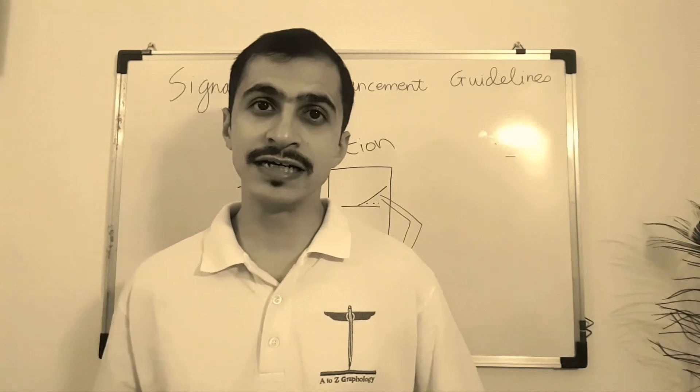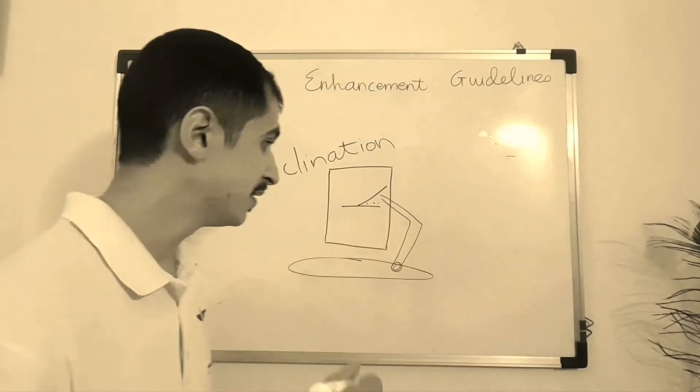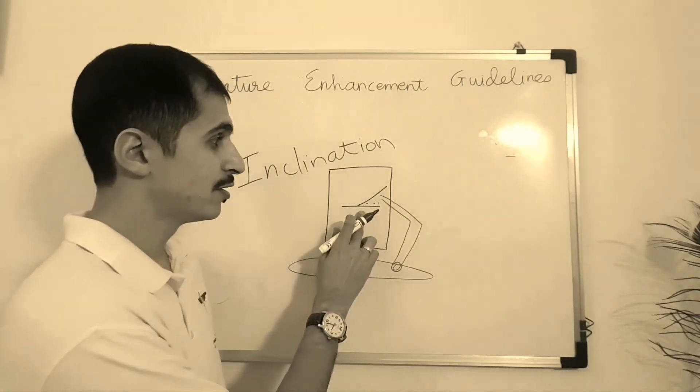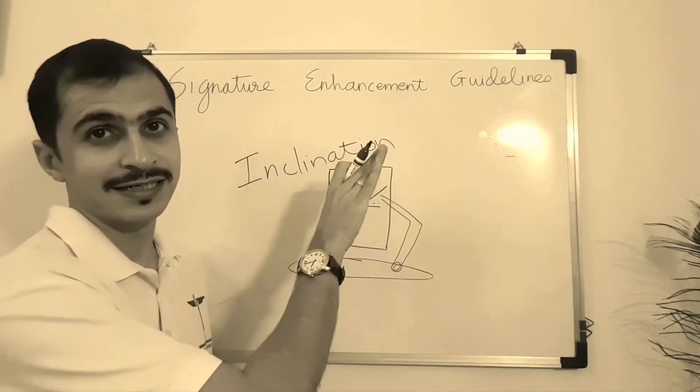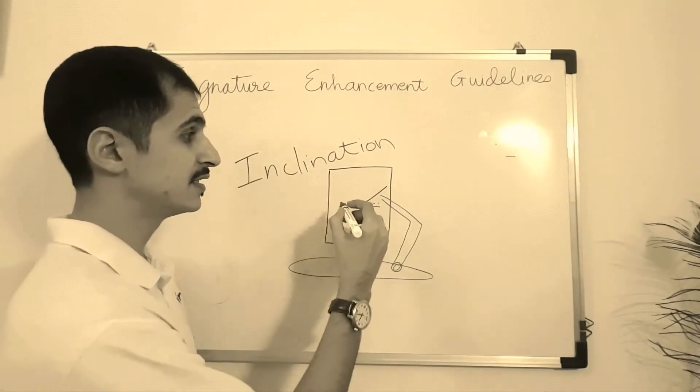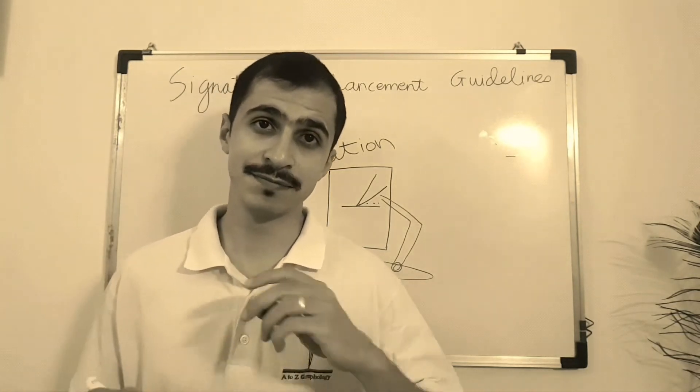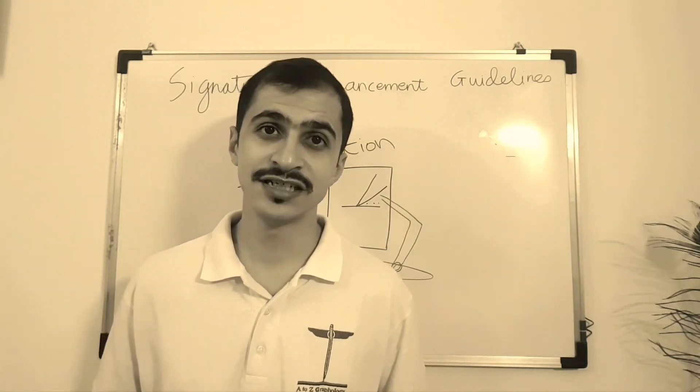So, if your angle of inclination is more than what you are comfortable, let's take for example, this is around 40 degrees inclined, around 40 degrees, if the person does 60 to 70 degrees inclined baseline for the signature.